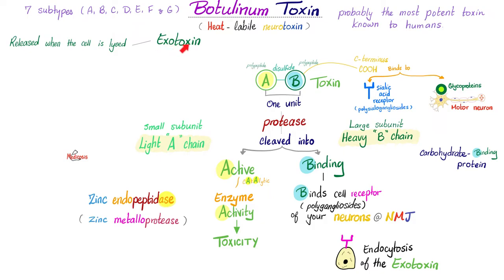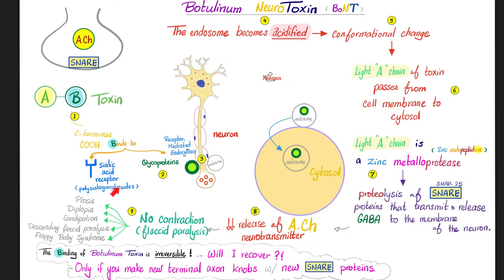Botulinum toxin is the classic exotoxin — it's an AB toxin. The A subunit is active; it has enzymatic catalytic activity. What kind of enzyme? Zinc endopeptidase, also known as zinc metalloprotease, because zinc is a metal in the periodic table and peptidase is an enzyme that breaks down peptides. The B subunit is for binding with your cell receptor. In terms of pathogenesis, the toxin breaks down the SNARE proteins because it has a protease. Once the SNARE proteins are cleaved, you are unable to release acetylcholine at the neuromuscular junction.